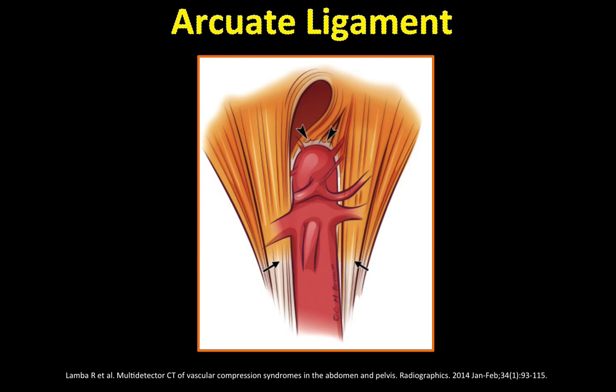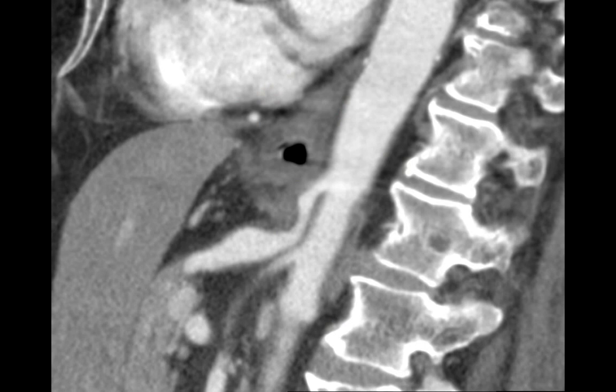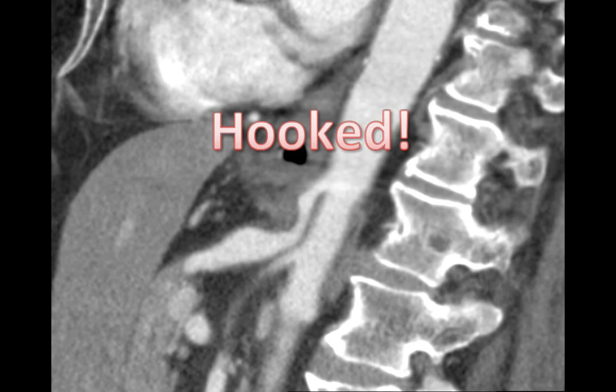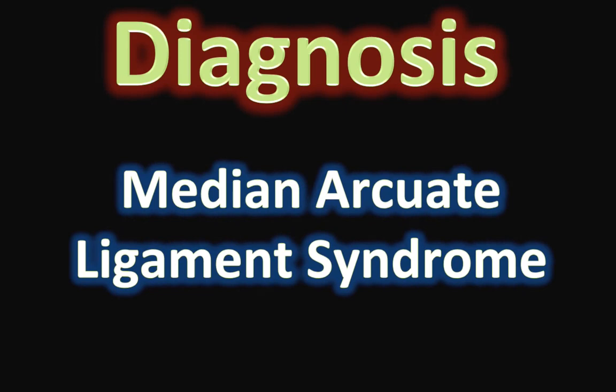But in a proportion of patients, this crosses over the celiac artery. It is important to remember that only a proportion of these patients may have symptoms, so this appearance should always be correlated with the clinical picture before calling the syndrome. The classic appearance on the sagittal image has been described as a hooked appearance of the celiac artery. So the diagnosis is median arcuate ligament syndrome if the patient is symptomatic.